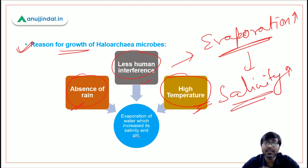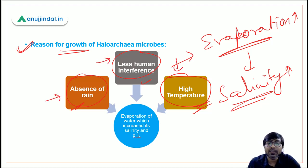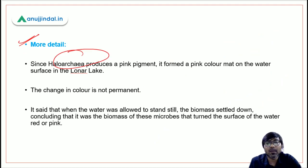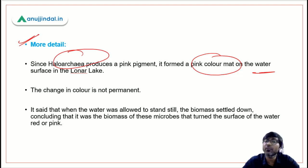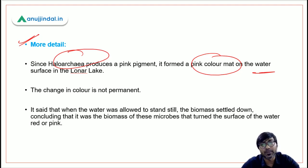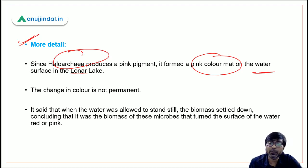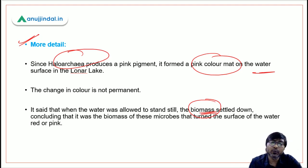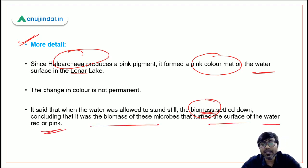Since evaporation is increasing, salinity is also increasing. Increased salinity is one of the favourable conditions for the growth of these microbes. Because of these three reasons — absence of rain, less human interference, high temperature — evaporation increases, salinity increases, which led to the growth of Haloarchaea microbes in the lake. These microbes produce a pink pigment forming a pink colour mat on the water's surface. This colour change is not permanent; when conditions become unfavourable, the pink colour will disappear.